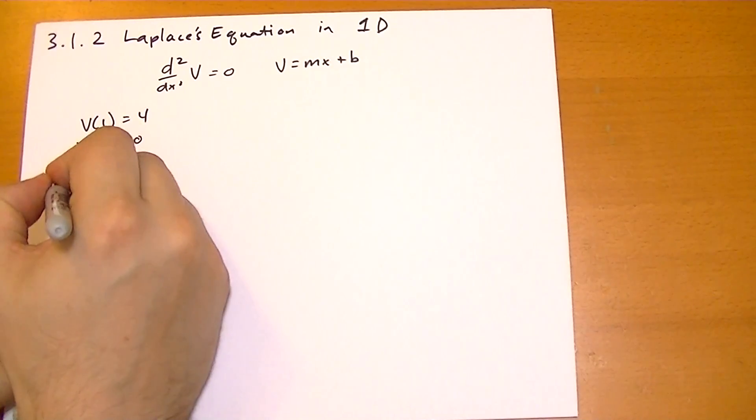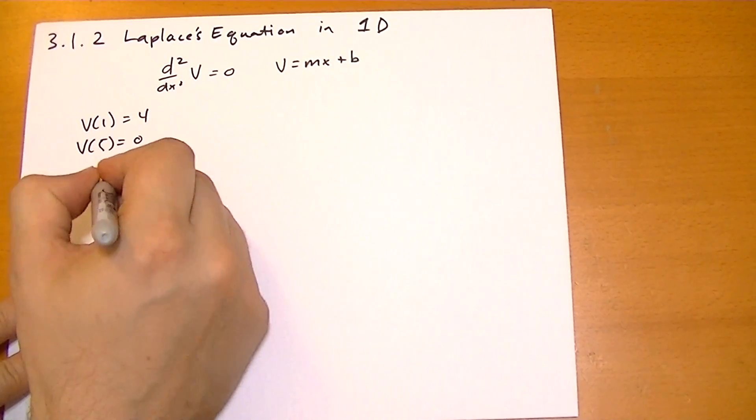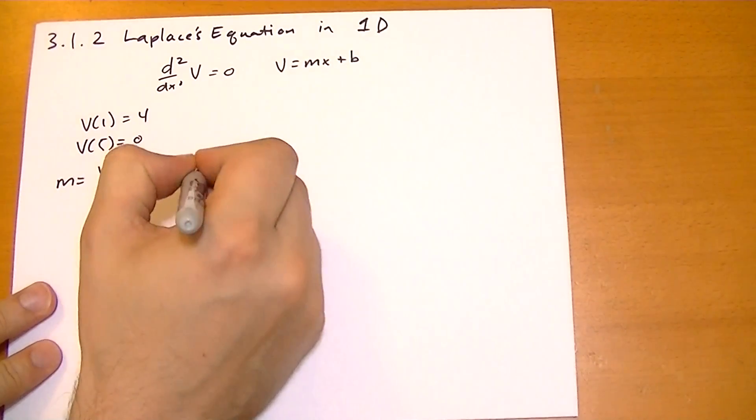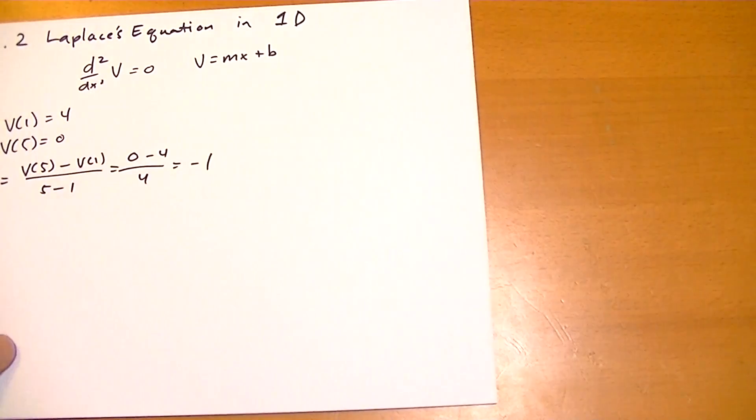Well, then we find the slope. So m is going to be v(5) minus v(1) all over 5 minus 1, which is 0 minus 4 over 4, which has made it minus 1.